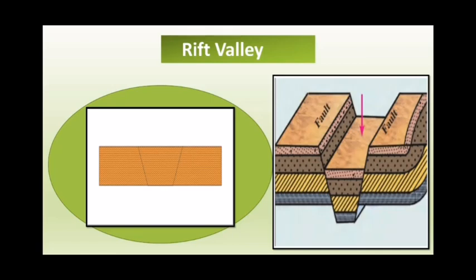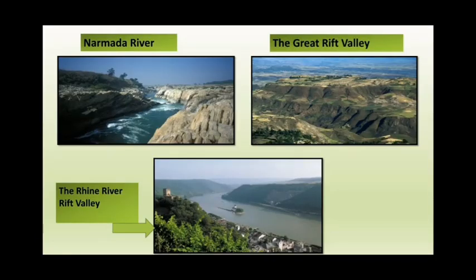The slopes of Rift Valley are steep. There are some examples of Rift Valley: the Narmada River in India, the Great Rift Valley in Africa, the Rhine River Rift Valley of Europe are examples of Rift Valley.